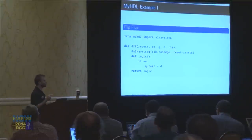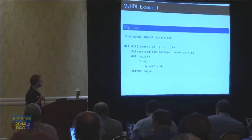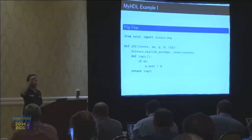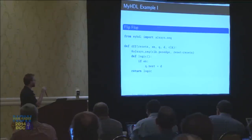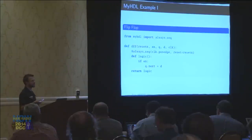And when it resets with the reset line, everything gets reset to the initial values. The logic is: if it's enabled, then set the output — the next output on the line — so the clock goes up, and the next output on the next up is going to be whatever value came in. That's how you write a D flip-flop in myHDL. We're going to build up in complexity from here, so this is a very simple machine.